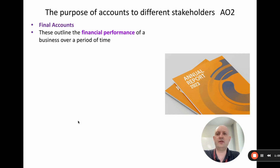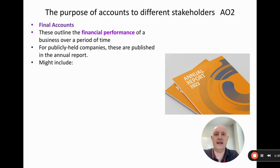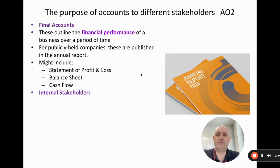Final accounts outline the financial performance of a business over time. For publicly held companies, these are published in the annual report, which usually includes three things: a statement of profit and loss, a balance sheet, and a cash flow statement. Cash flow is dealt with in a different chapter; this chapter covers profit and loss and balance sheet.